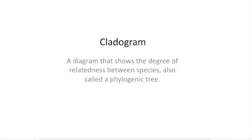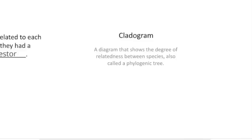A cladogram is also called a phylogenetic tree. Since the science that uses it is called phylogeny, you can find the first part of that word in 'phylogenetic tree.' So cladogram and phylogenetic tree are two words for the same diagram. It's important to know both how to read a cladogram and how to draw one.